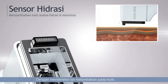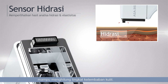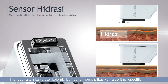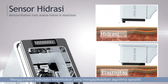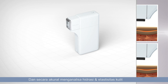By sensing moisture ions in the skin, it calculates the amount of moisture on the skin. Using a moisture calculator that applies a specific algorithm, we can establish a correlation between hydration and elasticity and accurately analyze both.